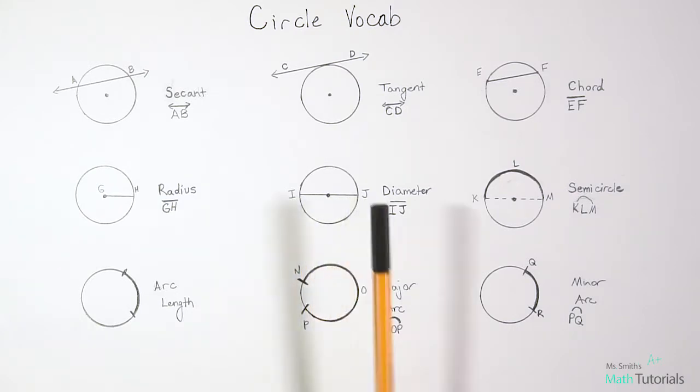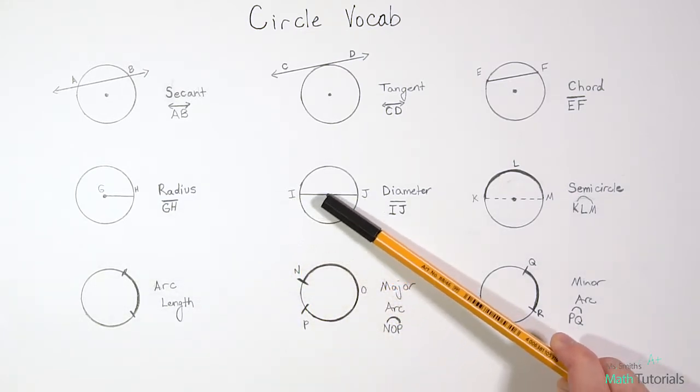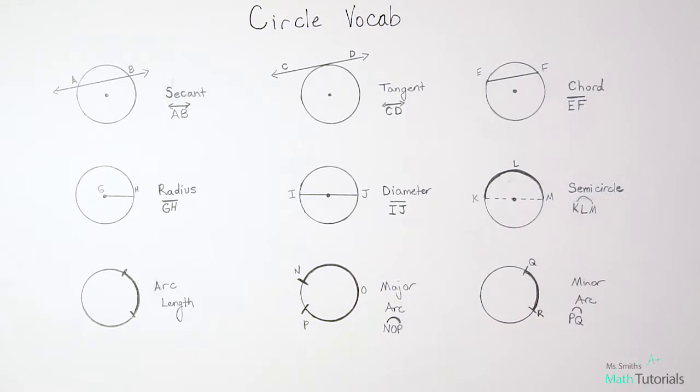And it doesn't have to be going horizontal like this. It could be going this way or that way. It doesn't matter, but it crosses through the center and covers the whole distance of the circle. So that's called a diameter. In this case, it would be IJ. And again, it is a segment, so we do a segment IJ.